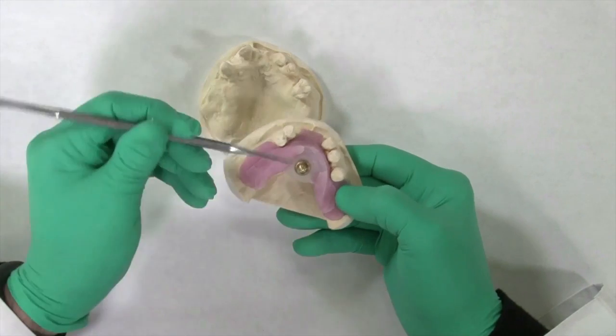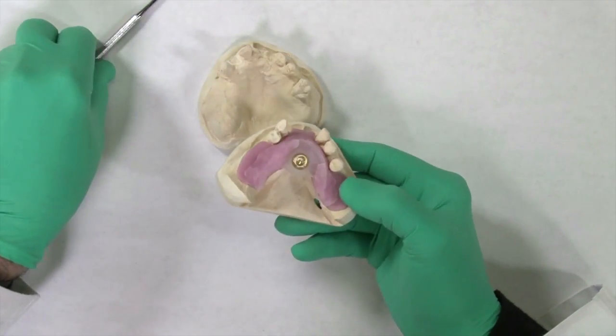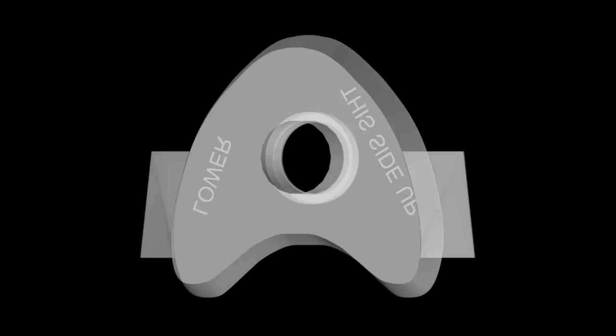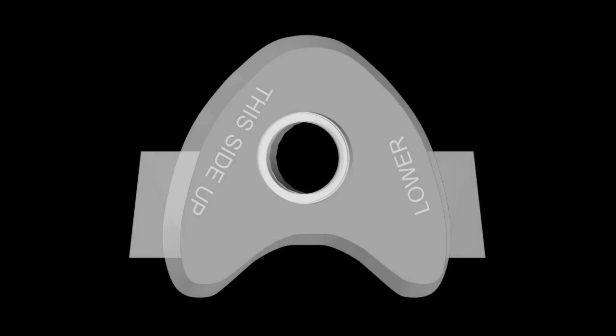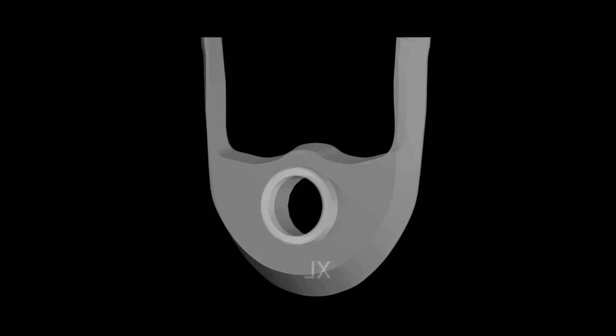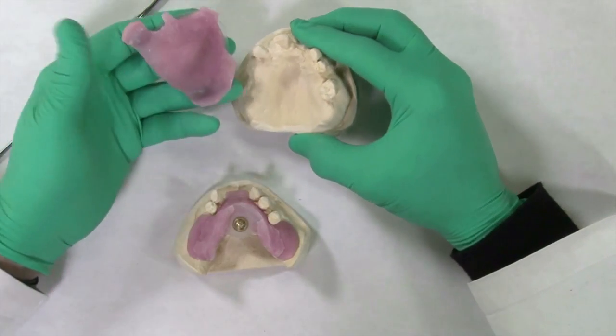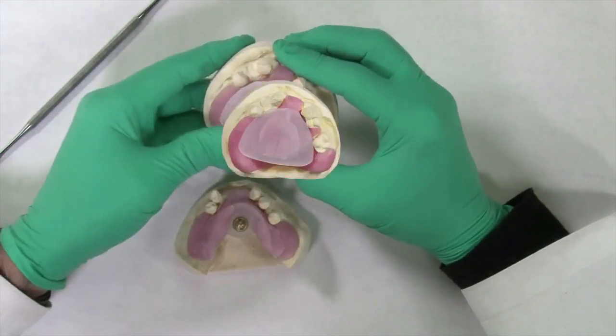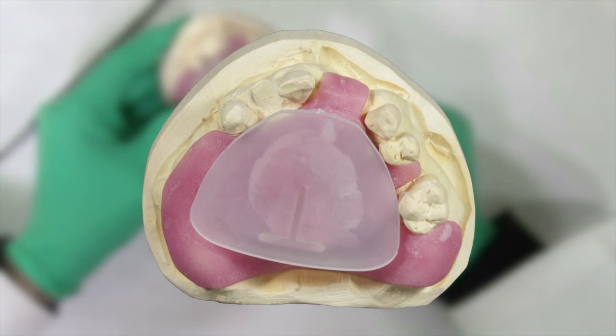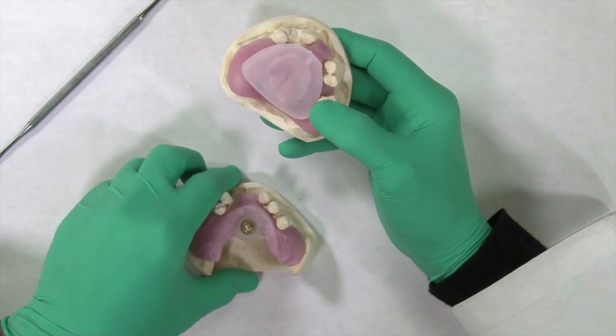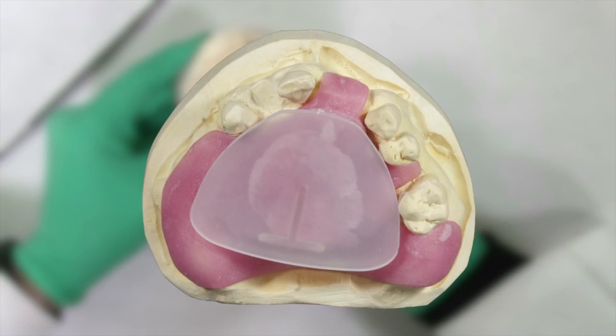In a dentate or partially dentate case, it is necessary to utilize either the small pin receiver or one of the modified pin receivers to avoid the teeth when mounting. Similarly, on the upper arch, a base plate is fabricated with tissue stops in the edentulous areas and palate. A striking plate is then attached, once again staying below the occlusal plane. The striking plate can be easily trimmed with an acrylic burr to avoid impinging upon the teeth.